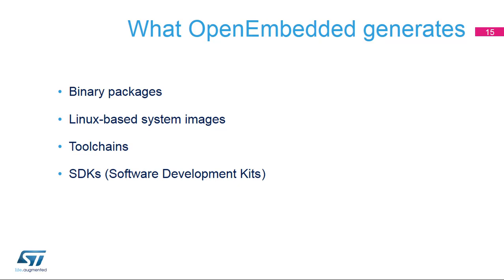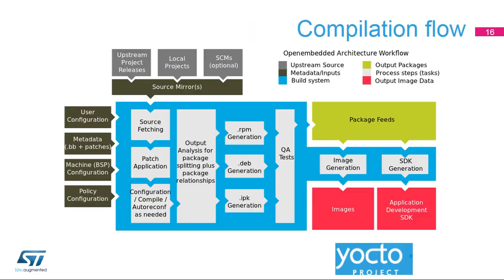OpenEmbedded also generates a Software Development Kit (SDK) containing the tool chain as a ready-to-use SDK. Once the framework of your Linux distribution is defined, for simple developments the SDK can be the best tool to work with. This graph from the Yocto project site sums up the compilation flow: source code is downloaded from different locations, patches are applied, the source code is cross-compiled, packages are generated, images are generated, an SDK is generated, and additionally QA testing can be performed.